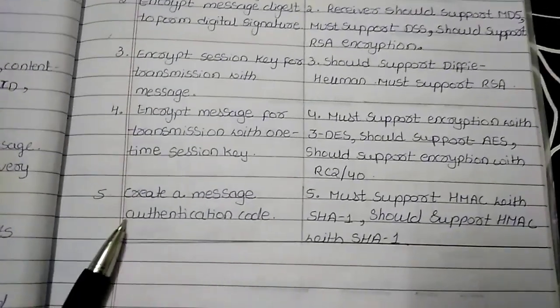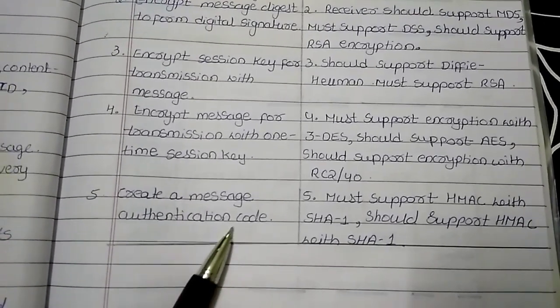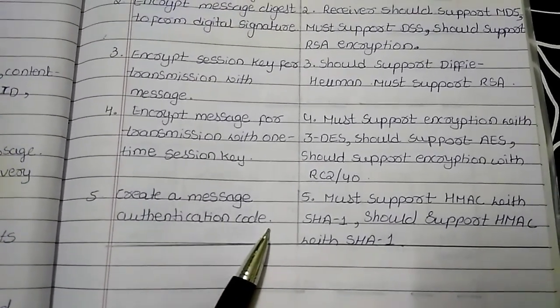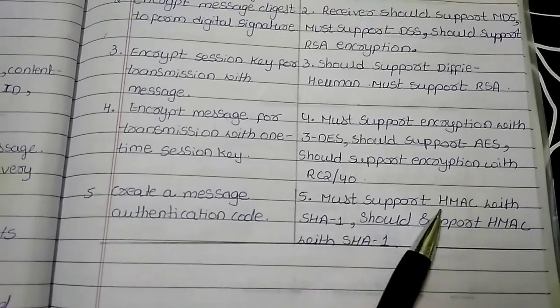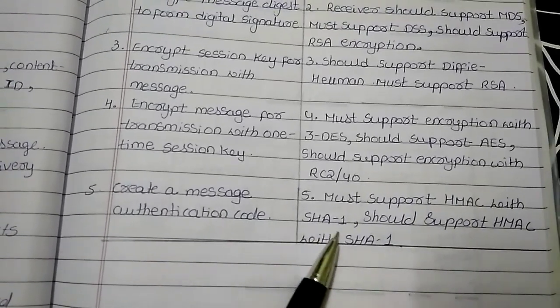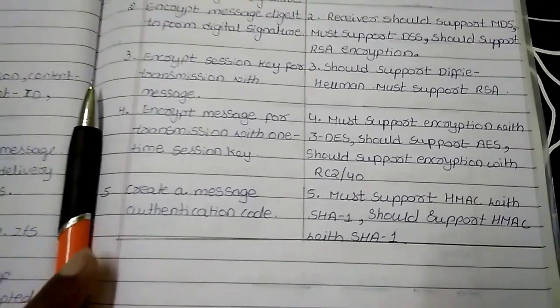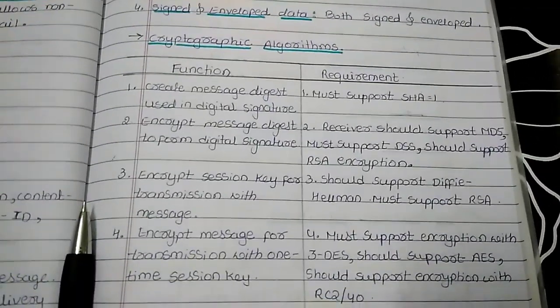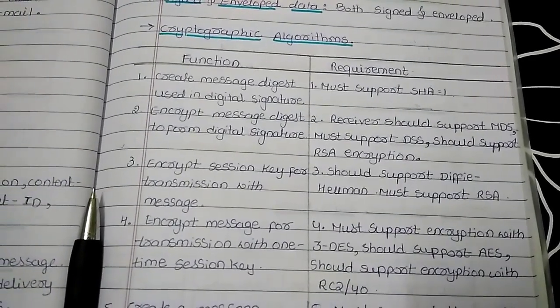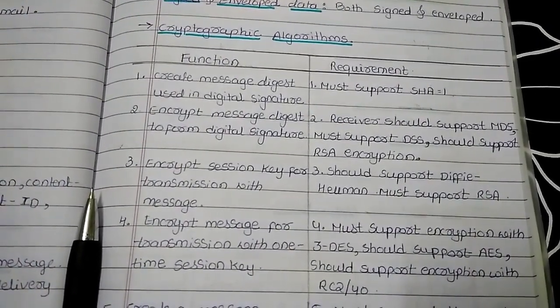The fifth function is create a message authentication code. The algorithm required is it must support HMAC with SHA-1 and should support HMAC with SHA-1. So these are the various functions and algorithms required with SMIME. Thank you.